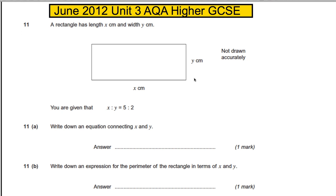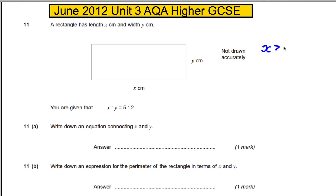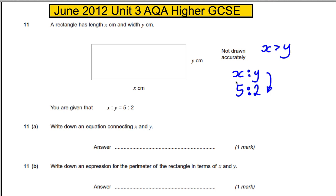We have a rectangle with length X and width Y. Notice that X is bigger than Y — look at the picture. The length is bigger than the width. You are given that the ratio of X to Y is 5 to 2, and it says: write down an equation connecting X and Y. This is telling me the X number is bigger than the Y number in a 5 to 2 ratio.